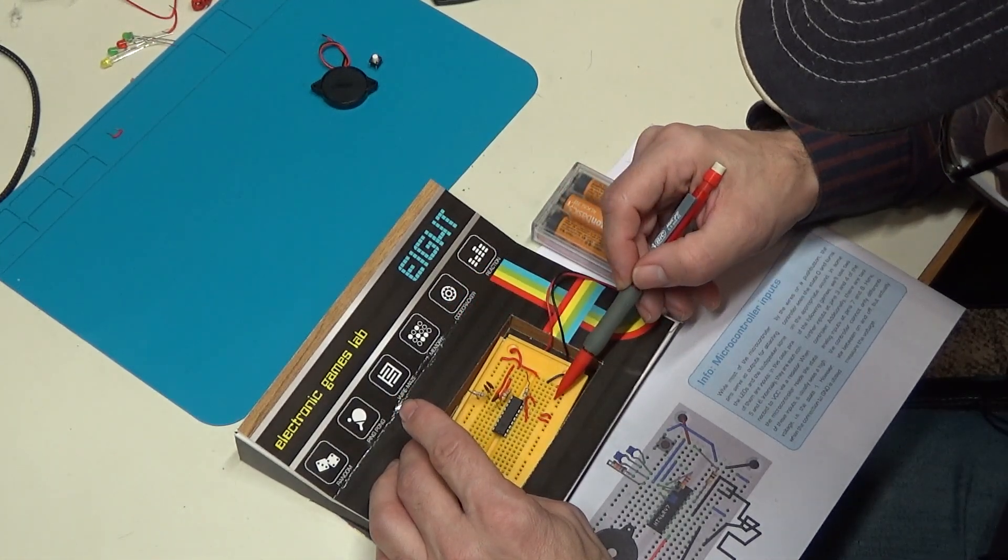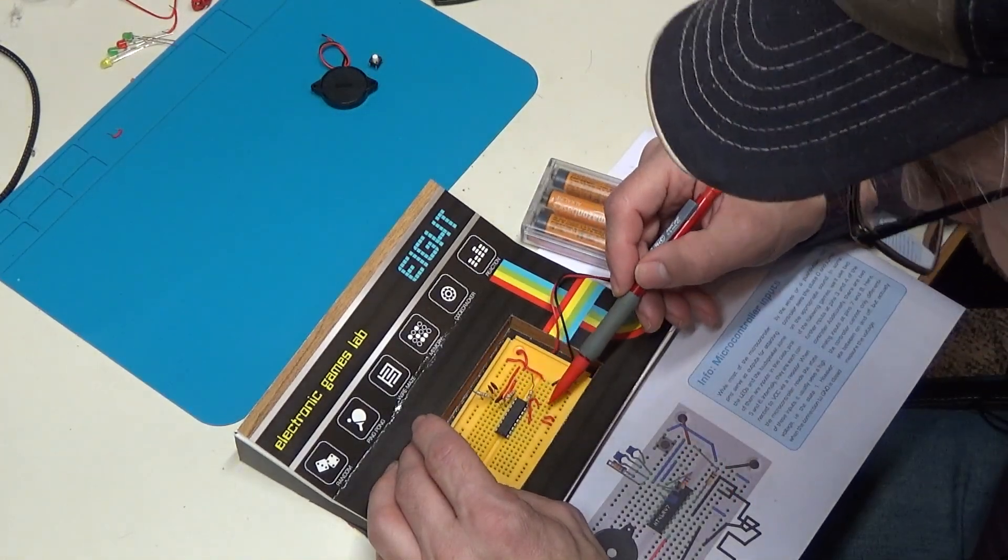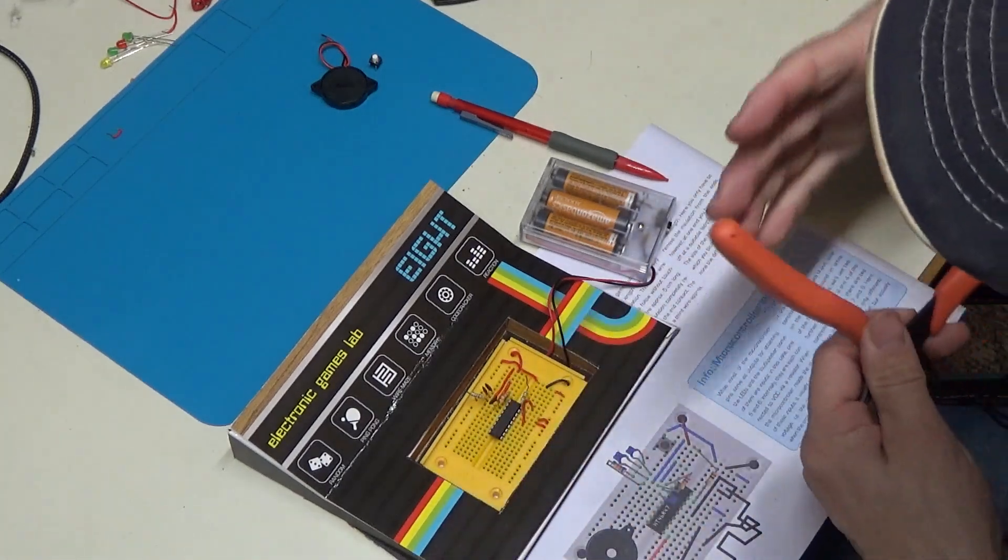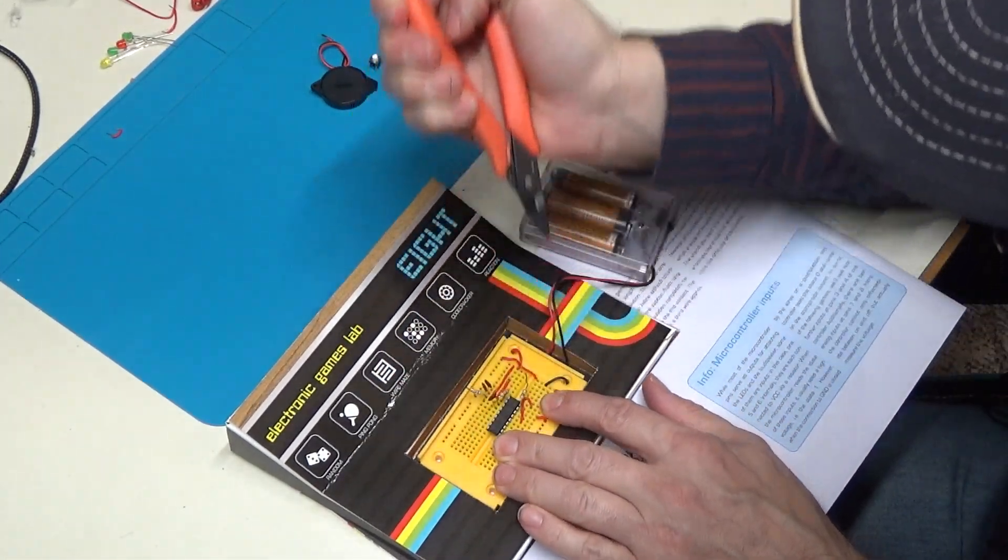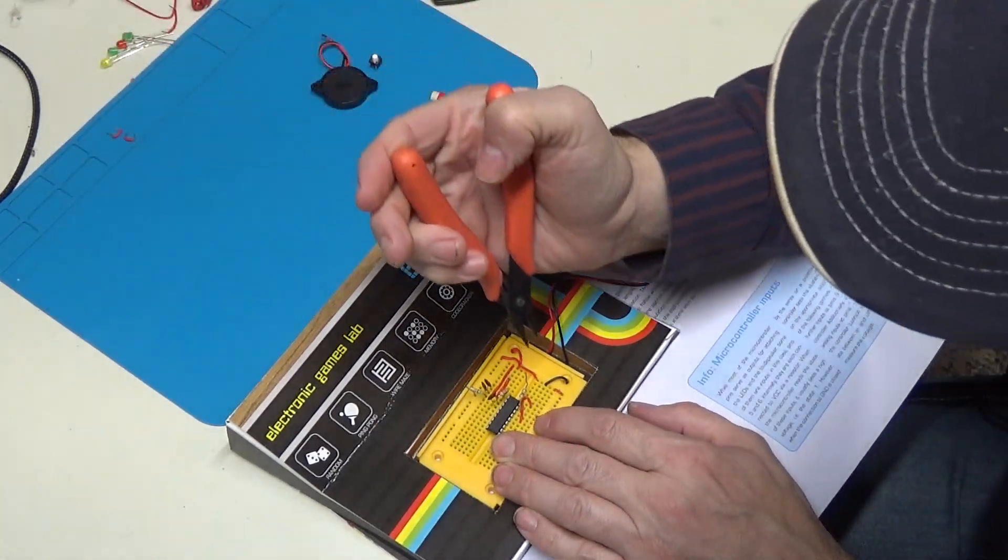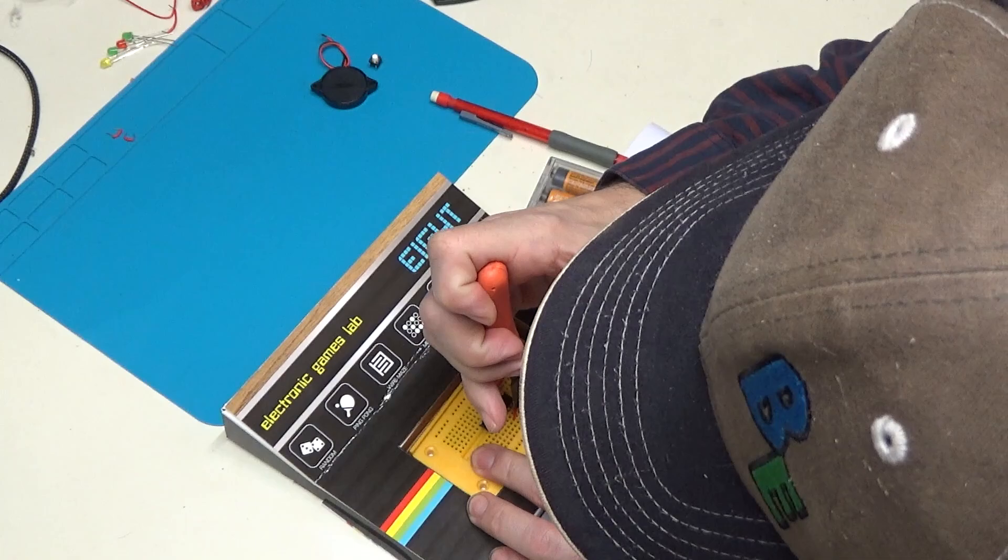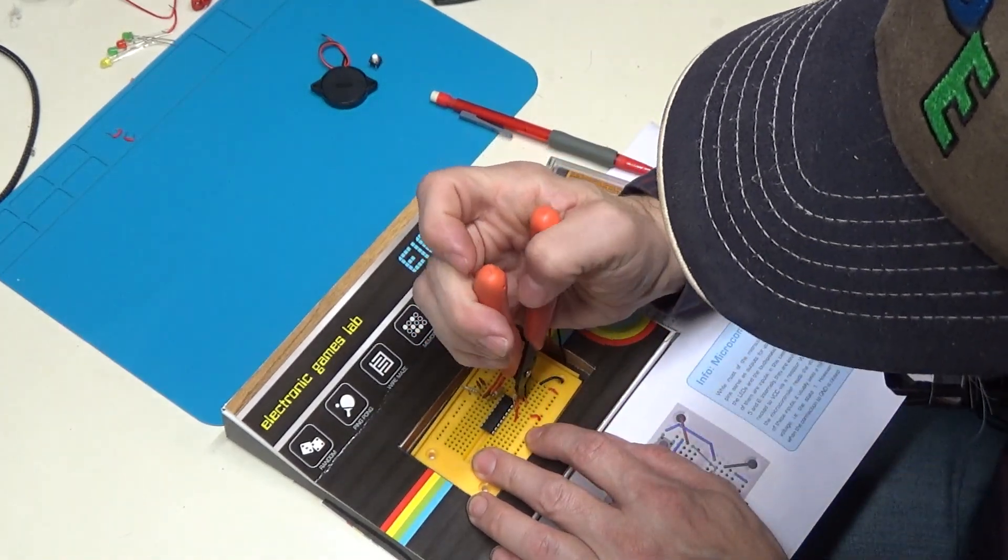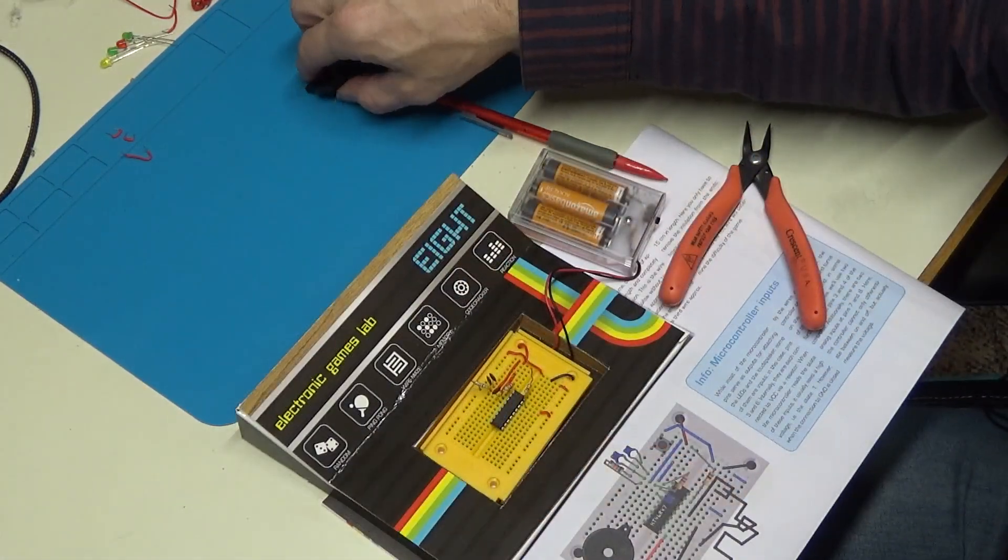That stays. That wire stays, which goes to pin nine. But that wire is removed. And this wire is removed. That wire is removed, which is our pin eight and pin seven. Or six.